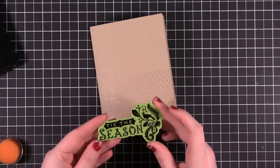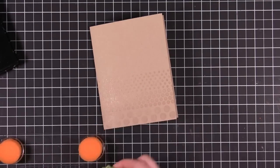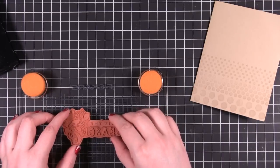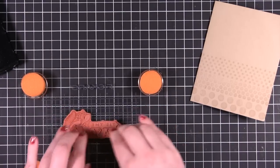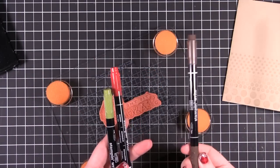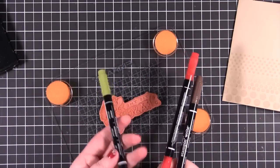Now I'm going to use this stamp from Inkadinkadoo. It's one of their cling stamps. I'm going to be doing some marker on the stamp. I'm using three colors from Stampin' Up: Chocolate Chip, Real Red, and Old Olive.